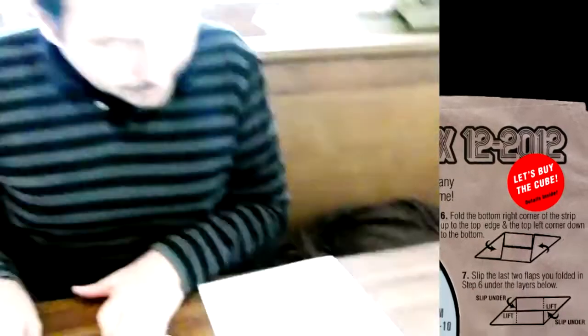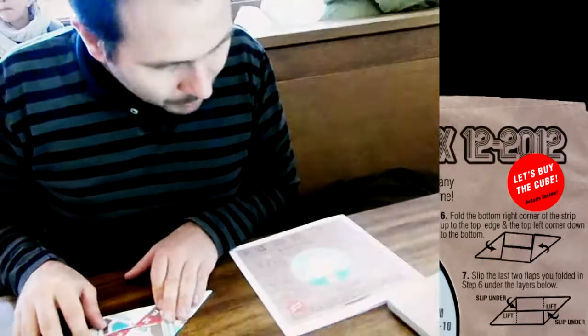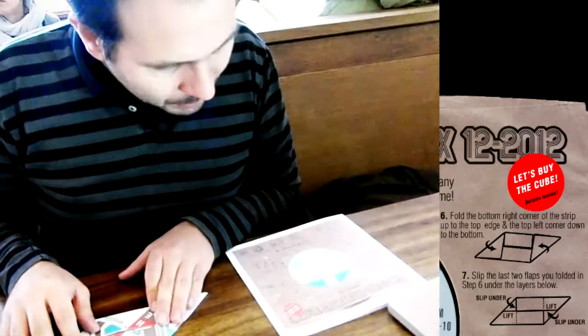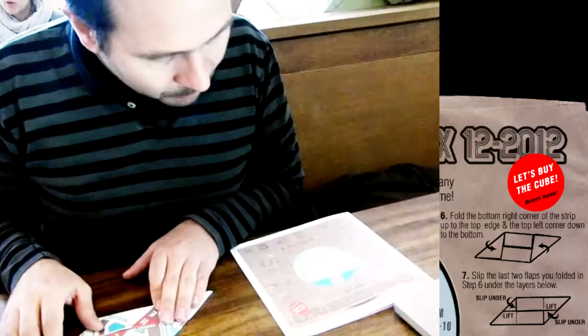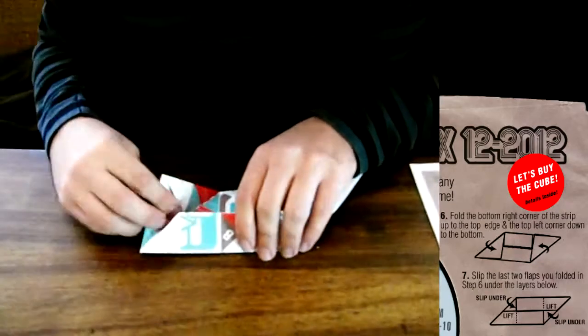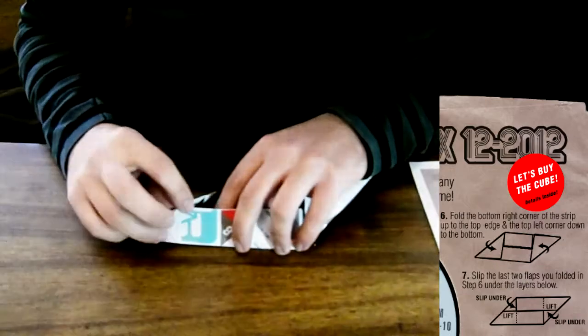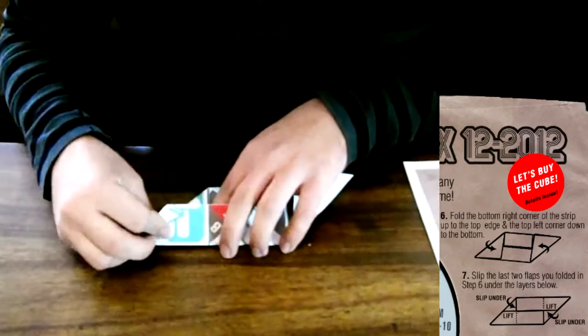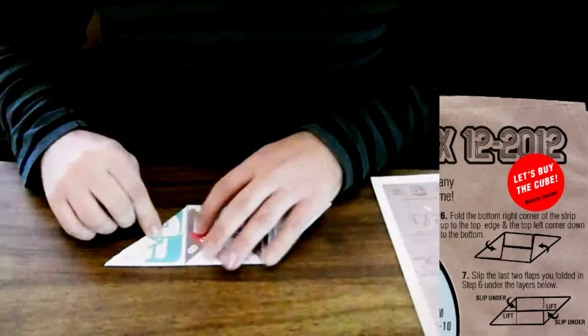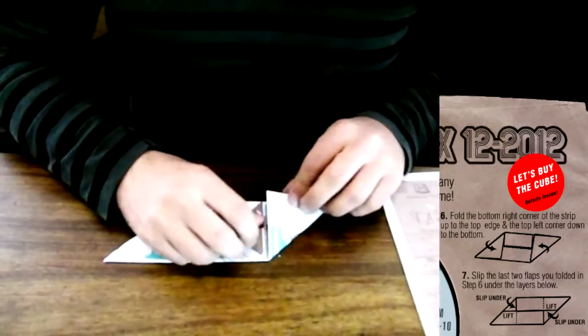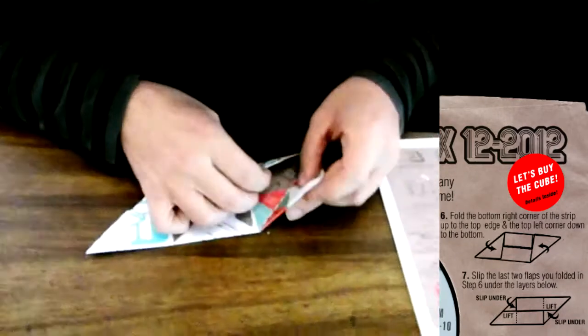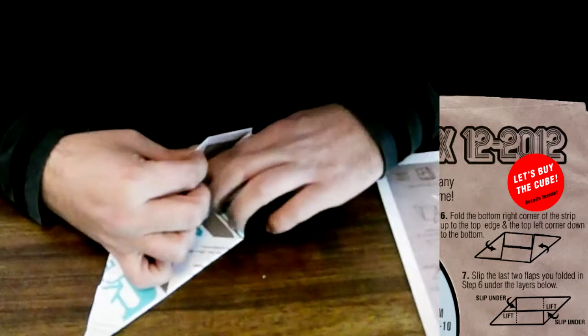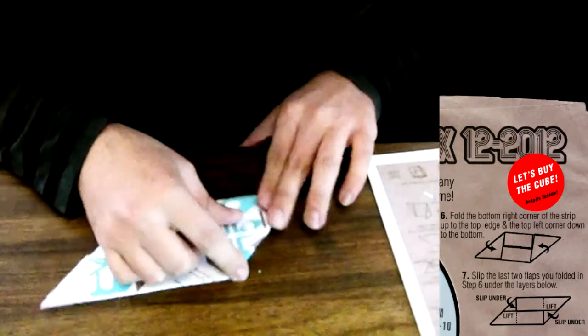Okay. Next bit. Slip the last two flaps you've folded in step six on the layers below. So we should be able to like this. Yeah! Look! The hand!